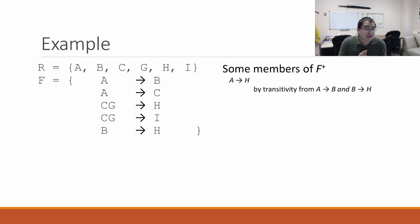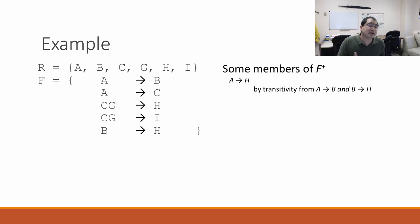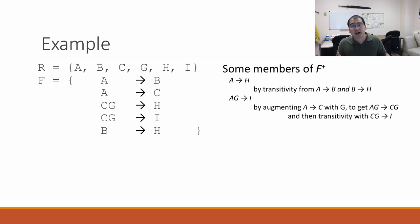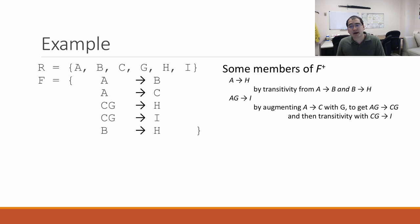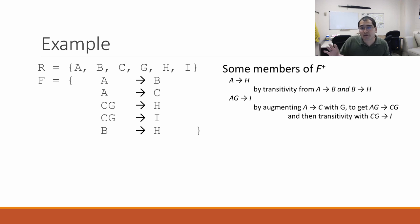Does ag functionally determine i? This one's a bit harder to construct. We start with a functionally determines c. Then we augment by adding g on both sides, so now we have ag functionally determines cg. And cg functionally determines i, so by transitivity, ag functionally determines i. You can do this for many other combinations — these are just some examples of using those axioms to build new functional dependencies.